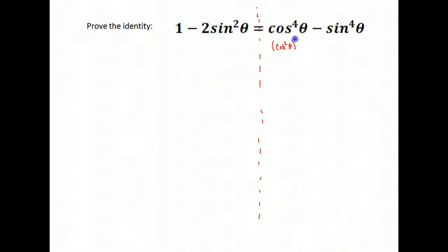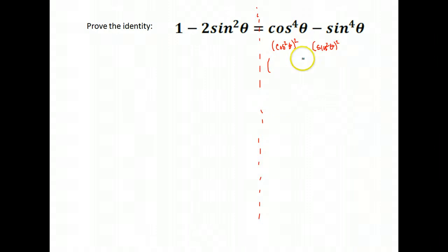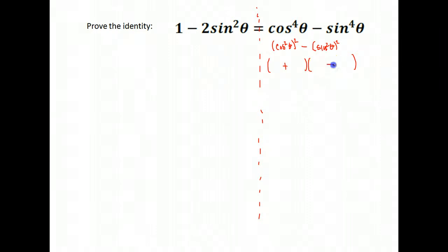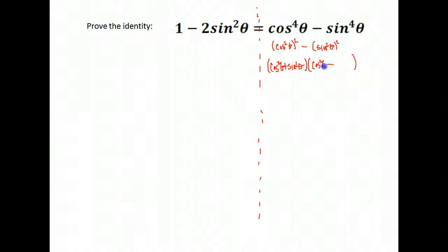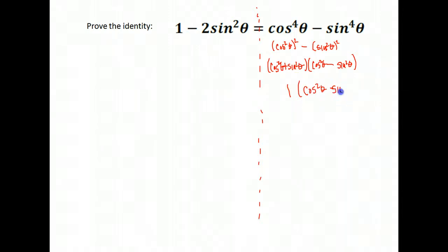To do that, we again use the difference of squares. Cosine squared squared gives us cosine to the fourth, and sine squared squared gives us sine to the fourth. We can factor using the difference of squares method from algebra, giving two factors: one is the two values that were squared added together, the other is subtracted. That gives us cosine squared theta plus sine squared theta for our first factor and cosine squared theta minus sine squared theta for our second. Using our identity, cosine squared plus sine squared equals 1, so we have 1 times cosine squared theta minus sine squared theta.